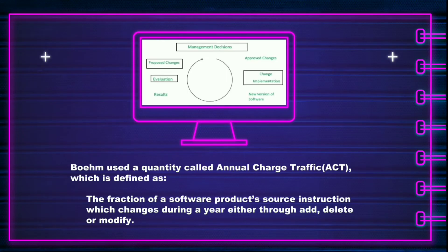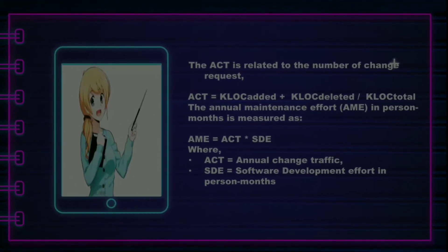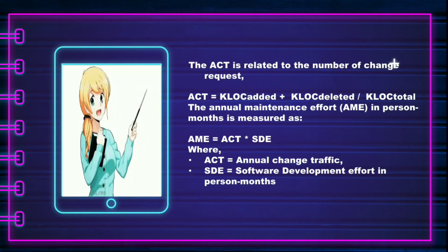Boehm used a quantity called Annual Change Traffic (ACT), which is the fraction of a software product's source instructions that change during a year, either through addition, deletion, or modification. ACT is related to the number of change requests: ACT equals K-LOC added plus K-LOC deleted, divided by K-LOC total. The Annual Maintenance Effort (AME) in person-months is measured as AME equals ACT multiplied by SDE.